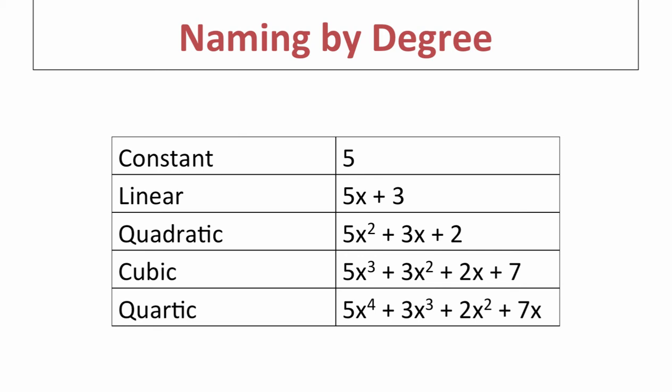Looking at the specific vocabulary that goes with degree: the number 5 has an exponent of 0 on its variable since there is none listed, so we call that a constant. If there is a variable with a degree of 1 as the highest degree, we call that a linear function — so 5x plus 3 has degree 1 and is linear.